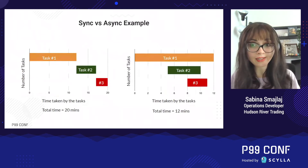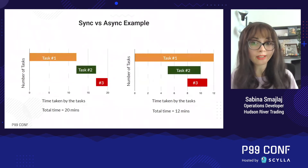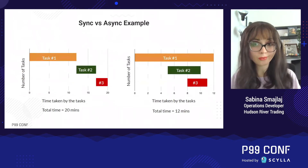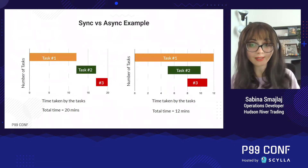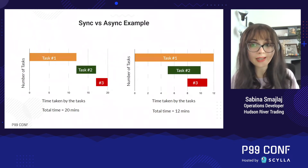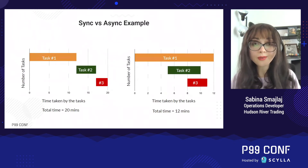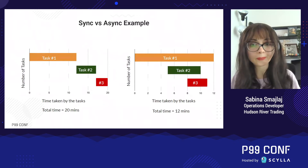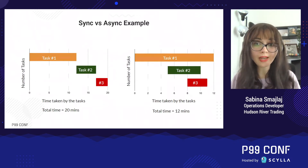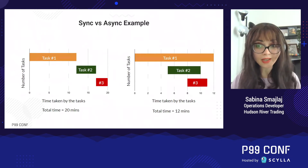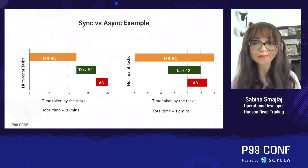If you did everything synchronously, you would start the chicken, wait until it was done, start the broccoli, wait until that was done, and then start the tomatoes. It would take you 20 minutes to finish everything. But there are times during this process where you are waiting and not doing anything. You can take advantage of these waits and start the other tasks.